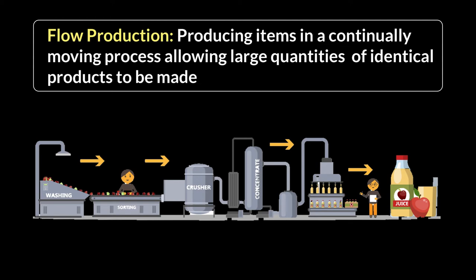We've just finished the first two types of production methods, namely job production and batch production. In this video we'll finish with the other two, starting with flow production. Flow production is all about speed and consistency — whenever a company has to make things in large quantities and meet demand quickly, flow production is the method, as all production goes on in a non-stop, continually moving process.